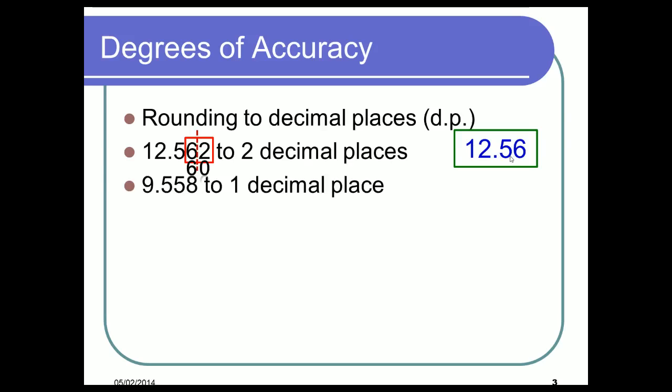Another example: 9.558 to one decimal place. Your rounding point is after the first decimal digit. The box to the left and right gives us 55. Is it closer to 50 or 60? Well, the rule is if it's five or above we round up to 60, if it's four or below it rounds down to 50. So that becomes 60, everything else to the left stays the same, and we get 9.6. And that's decimal places.